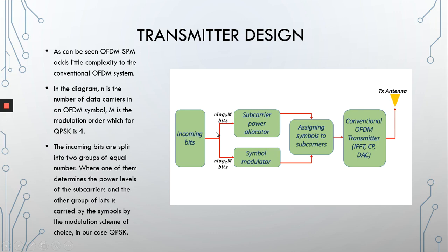We split the incoming bits into two groups: one is used to determine the power of the subcarriers of the OFDM symbol, whereas the other is carried by the symbol modulation scheme — which in our case is QPSK. After that, the modulated symbols are assigned to their subcarriers with their corresponding powers, and then the transmission process is exactly the same as conventional OFDM, from there to the antenna.